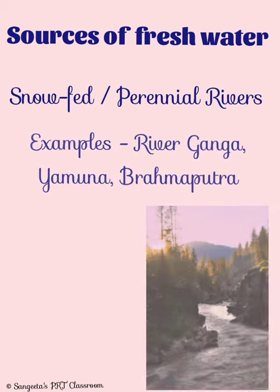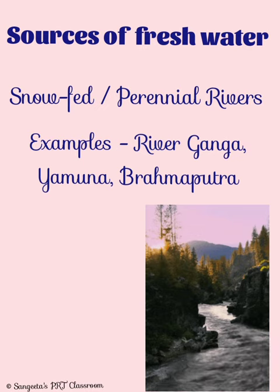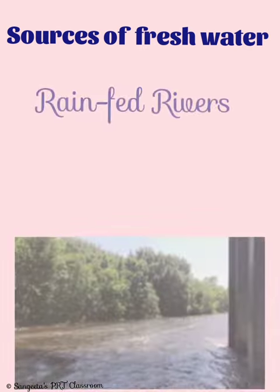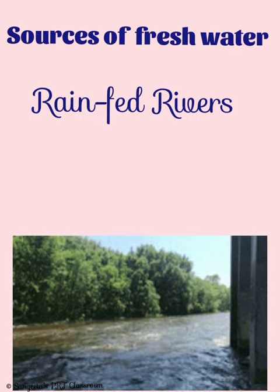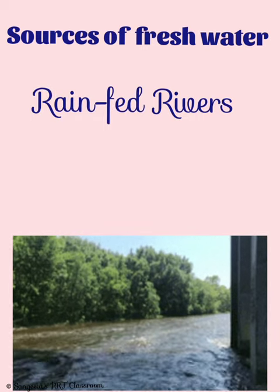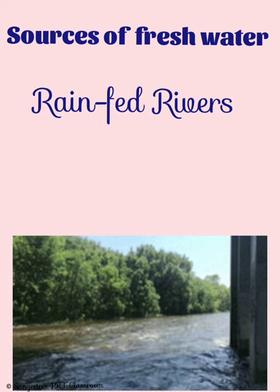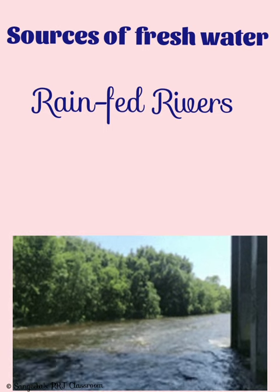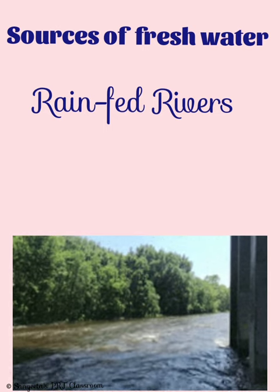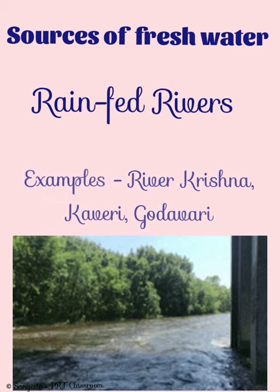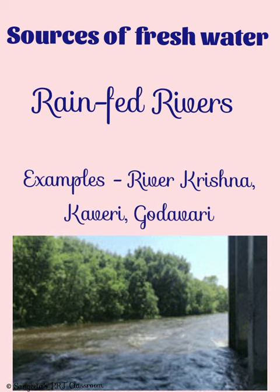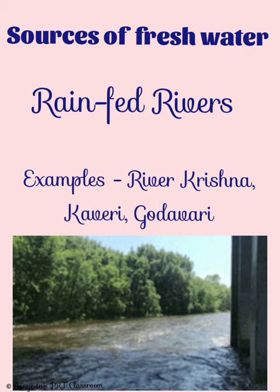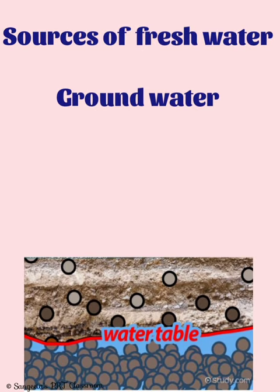For example, river Ganga, Yamuna and Brahmaputra are all perennial or snow-fed rivers. Whereas rivers which carry only rain water are called rain-fed rivers. They have a lot of water during the rainy season but dry up during summers. Krishna, Kaveri and Godavari are some examples of rain-fed rivers.